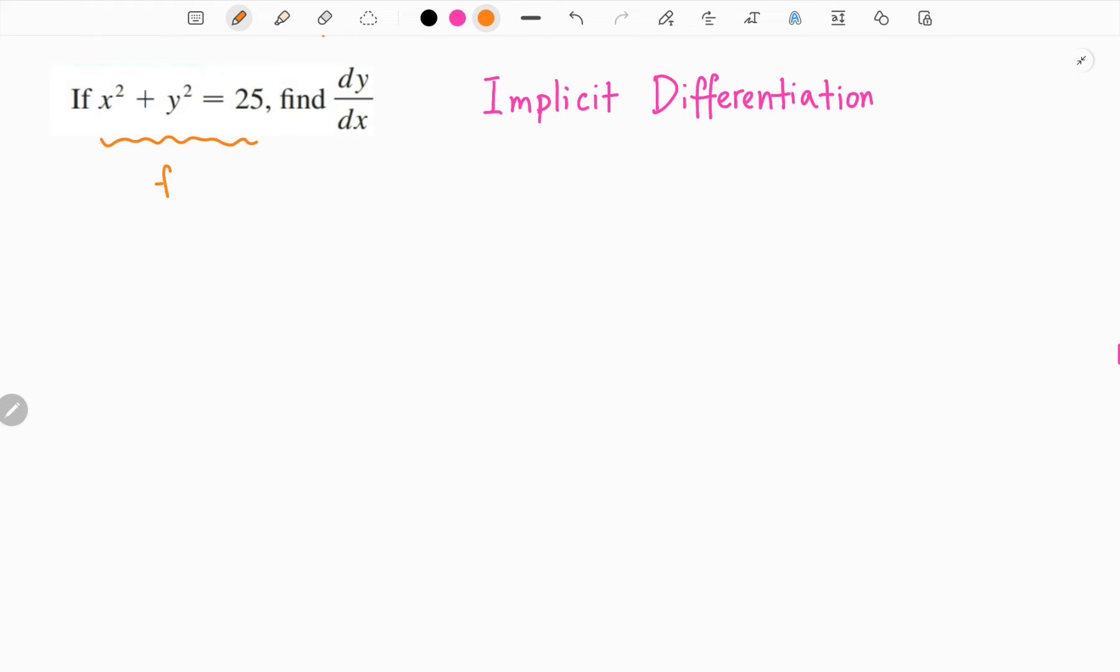So the general format for the implicit function is f(x, y) equals 0. There are only two steps in solving this kind of problem. The first step we want to do is differentiate both sides of the equation.